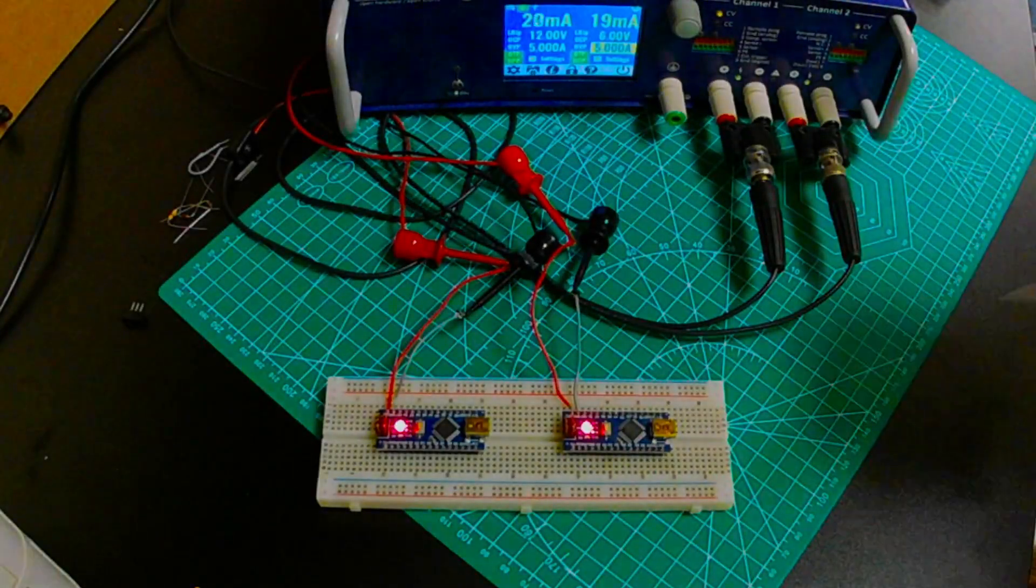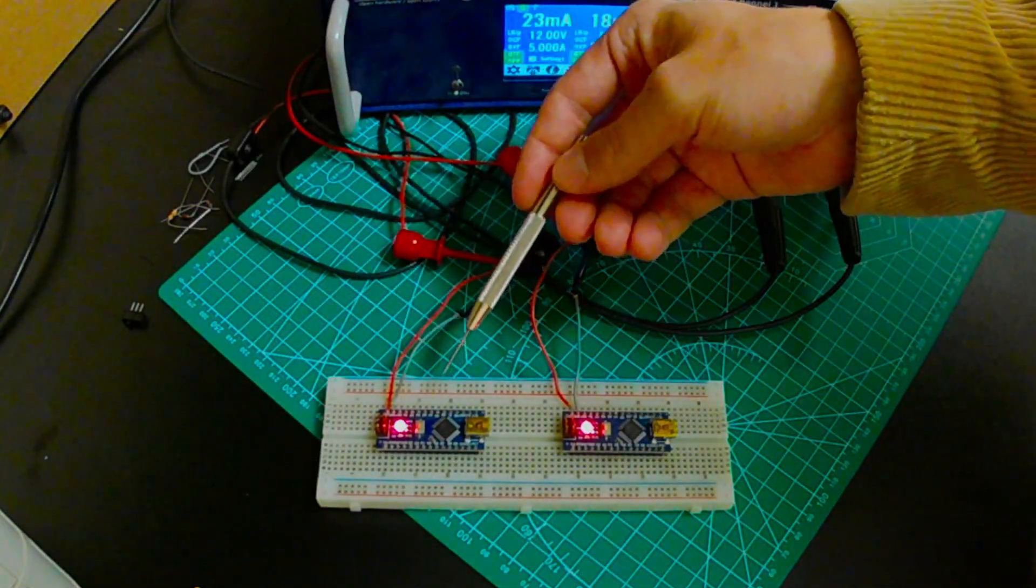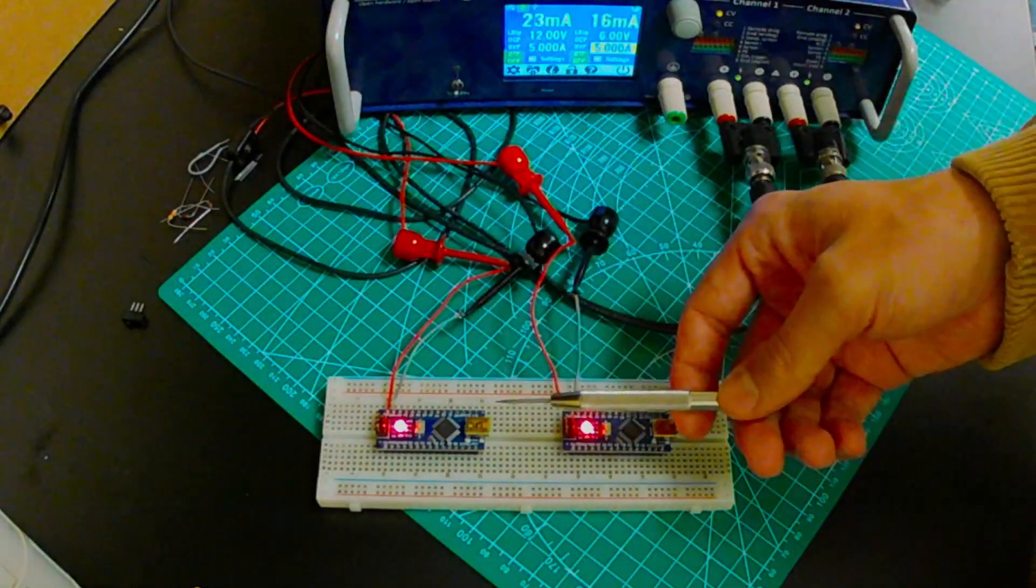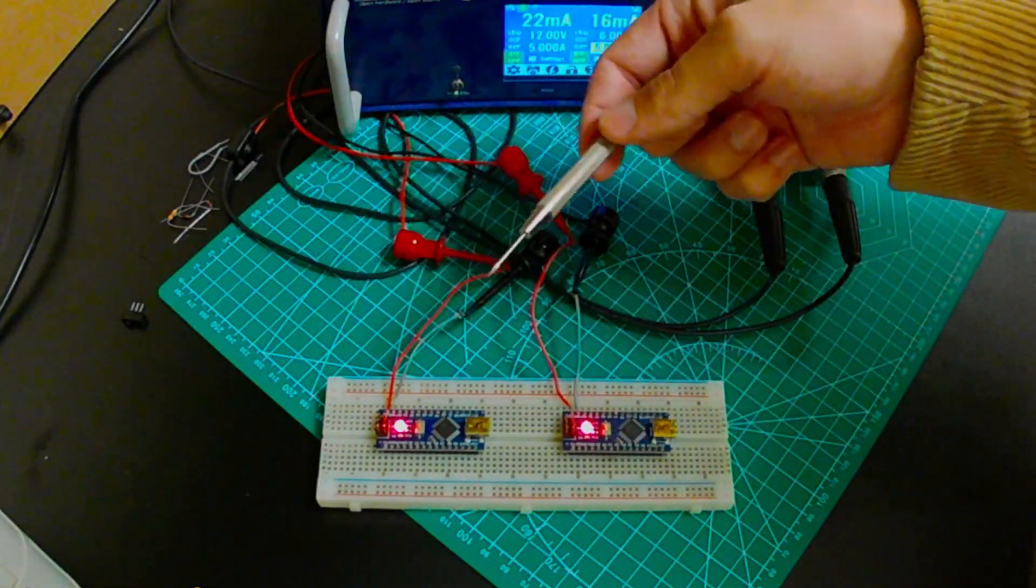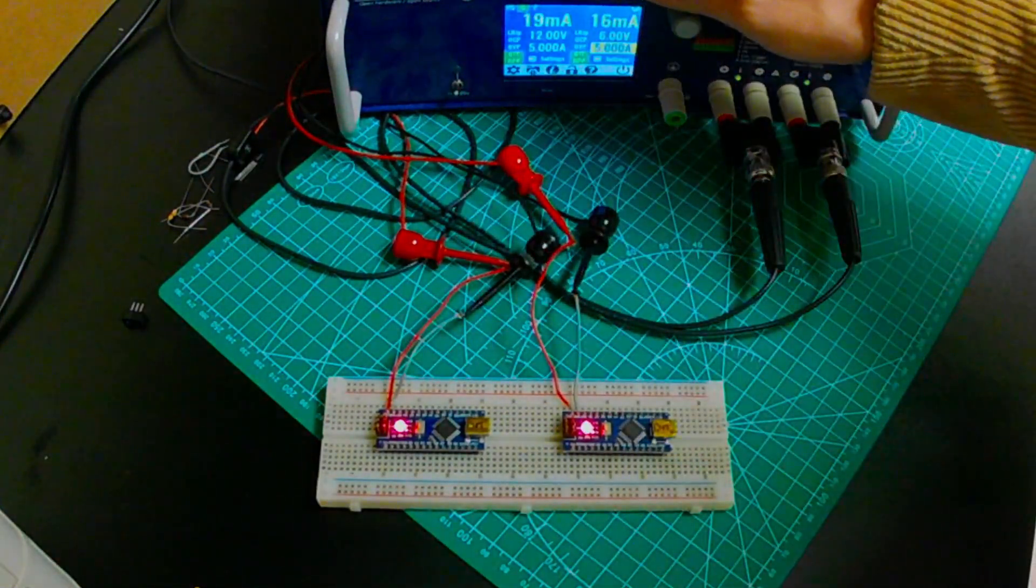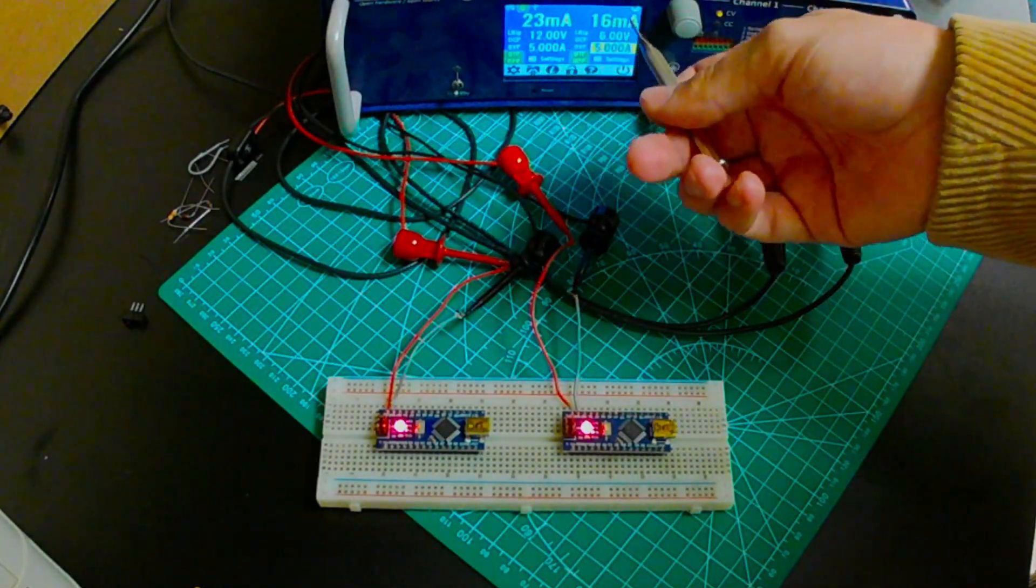What you see here are two almost identical circuits. We have an Arduino Nano and another Arduino Nano. They're not being powered through USB, they're actually being powered through their VIN inputs. And that's where the difference is. They're being powered by a power supply, and one is being powered by 12 volts, the other is being powered by 6 volts.